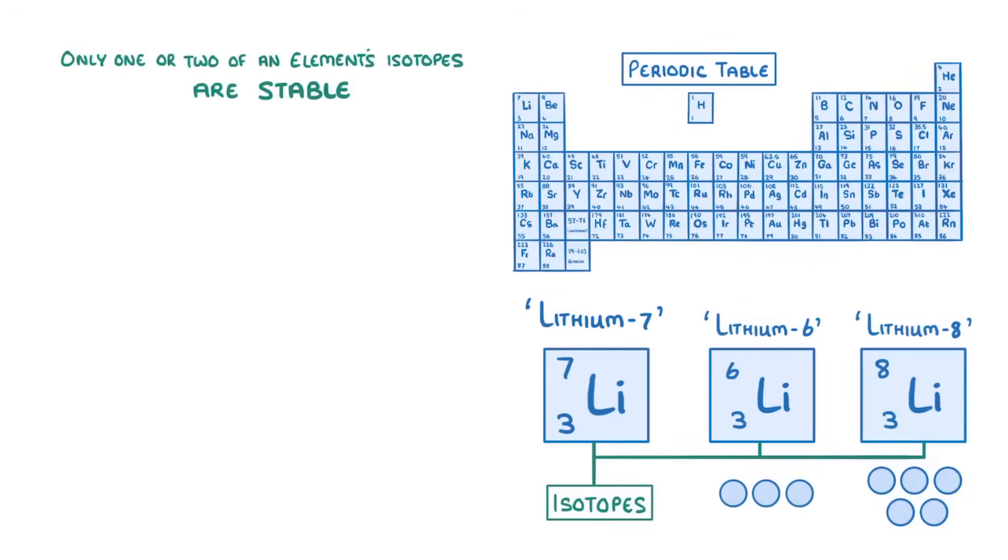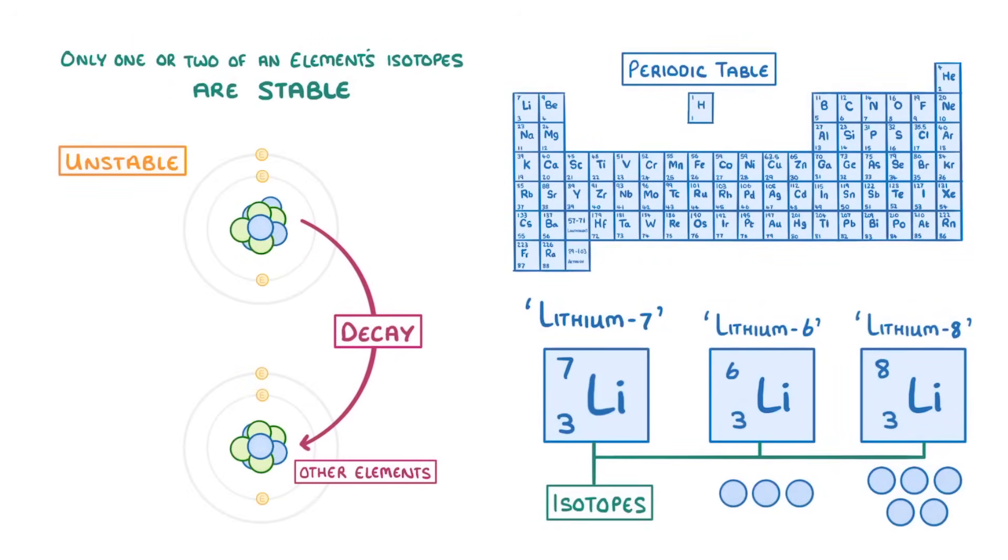Now generally, only one or two of an element's isotopes are actually stable. The other isotopes, which are unstable, tend to decay into other elements, by emitting radiation.